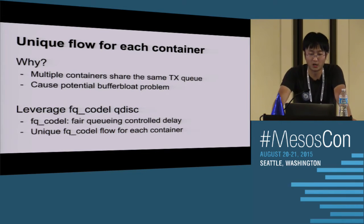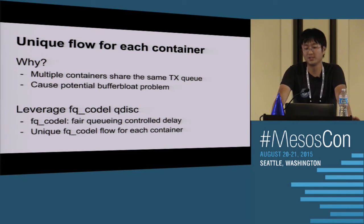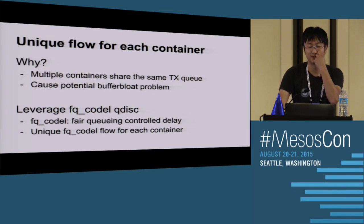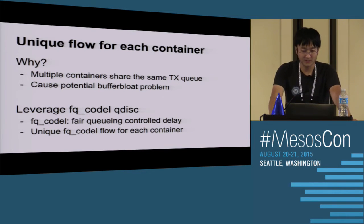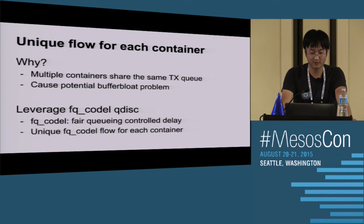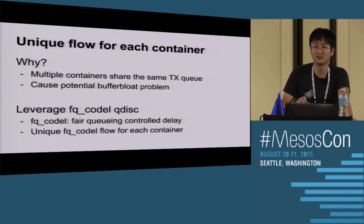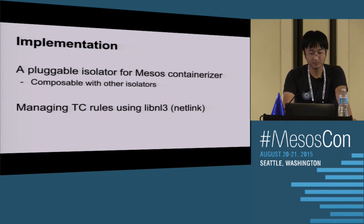For latency isolation, we use a unique flow for each container. Without this, multiple containers share the same TX queue on the host, causing potential buffer bloat - one container can flood the TX queue even with bandwidth capping. We leverage FQ CoDel (Fair Queuing Controlled Delay) qdisk, which allows you to specify separate virtual flows. We use one virtual flow for each container, which improves latency for individual containers.